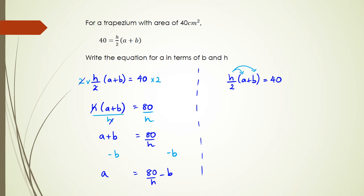What you'll end up with is ah over 2 plus bh over 2 equals 40. Then subtracting bh over 2 from both sides, you end up getting ah over 2 equals 40 minus bh over 2.